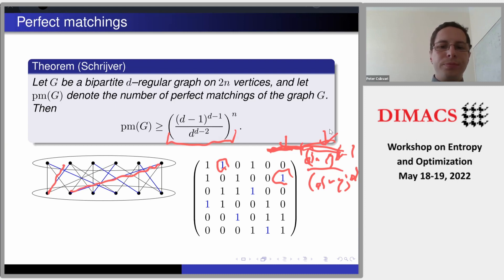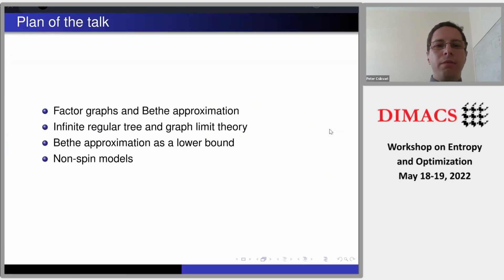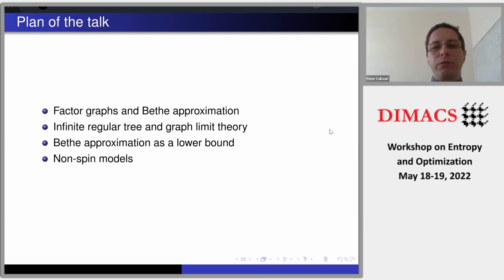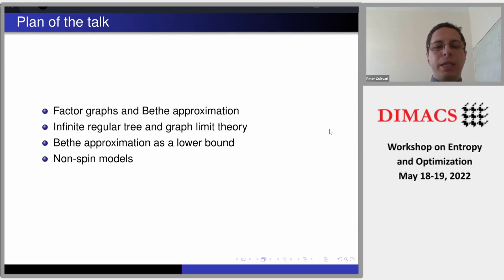So that was the motivation. Now let me give a plan of this whole talk. I will introduce factor graphs and beta approximations in general. Then I will elaborate on the question of what happens if I want to define this quantity for the infinite regular tree and connect it with graph limit theory. I will also elaborate on the phenomenon that beta approximation is quite often a lower bound. And at the very end, I will describe how we can study non-spin models.